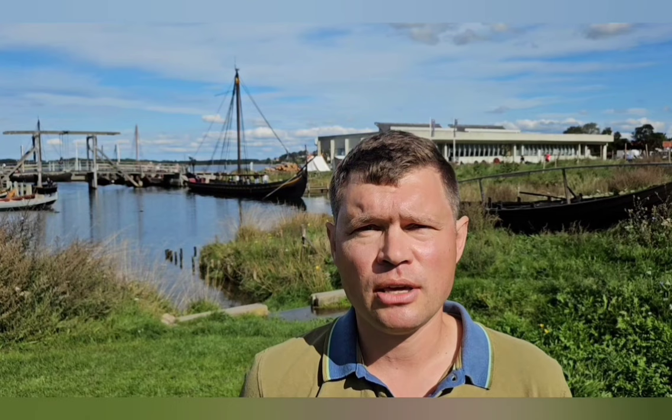This is the end of part one of the Lost 10 Tribes of Israel in Europe. In part two, we are going to look at the Bible prophecies concerning the lost 10 tribes of Israel, the DNA and physical appearance of the lost 10 tribes, the linguistics and a comparison between the Semitic script and the runes — the alphabet of ancient Scandinavia.